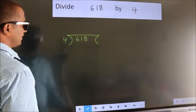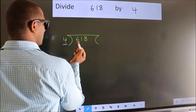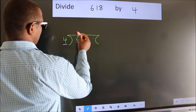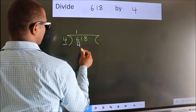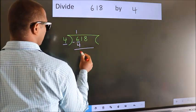Next, here we have 6, here 4. A number close to 6 in 4 table is 4 once 4. Now we should subtract. We get 2.